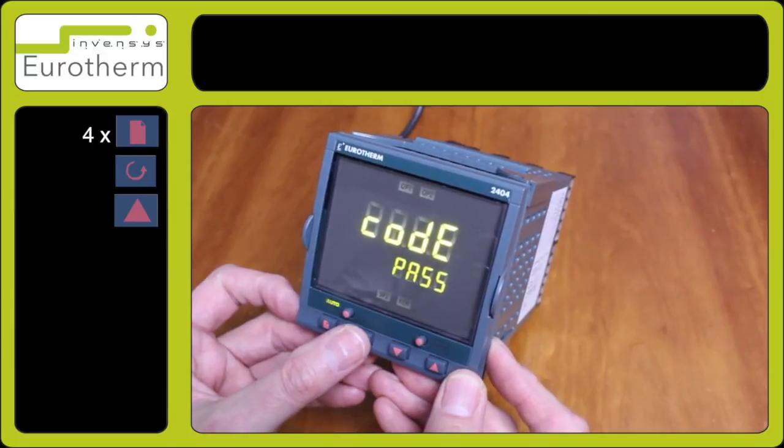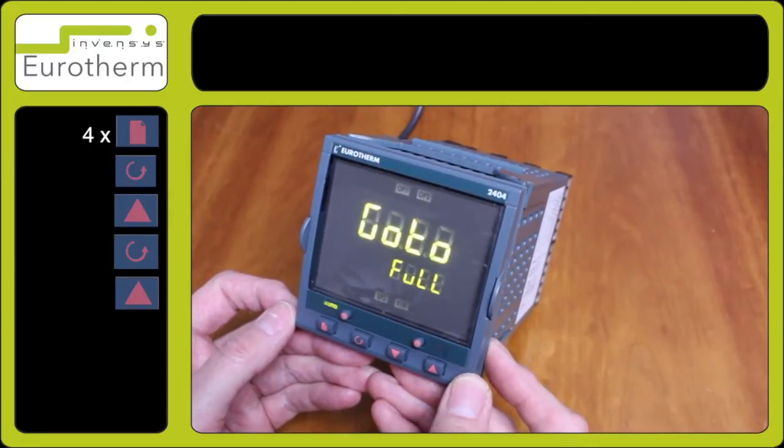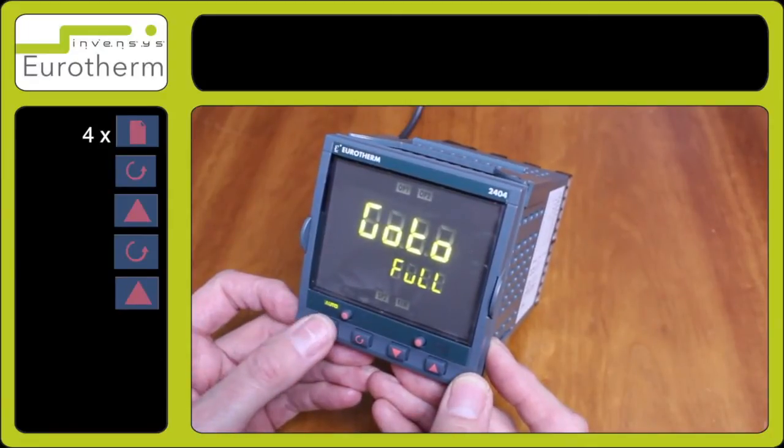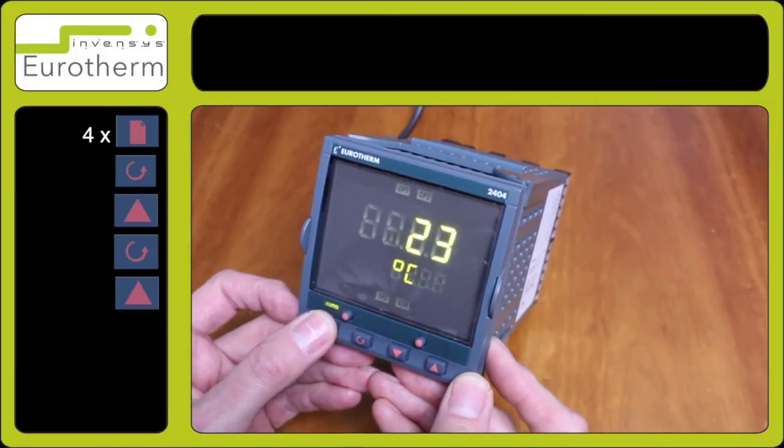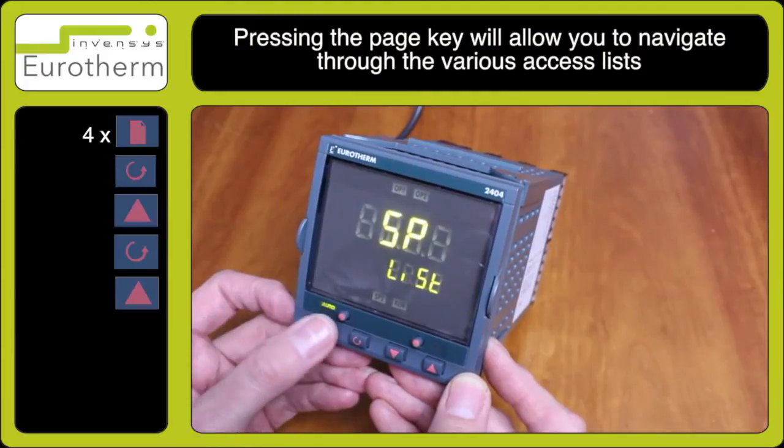Press the scroll key to go to, then press the up arrow key for full. In this level, while pressing the page key, you'll observe other lists appear such as the SP list, the IP list, the OP list, coms, and info.